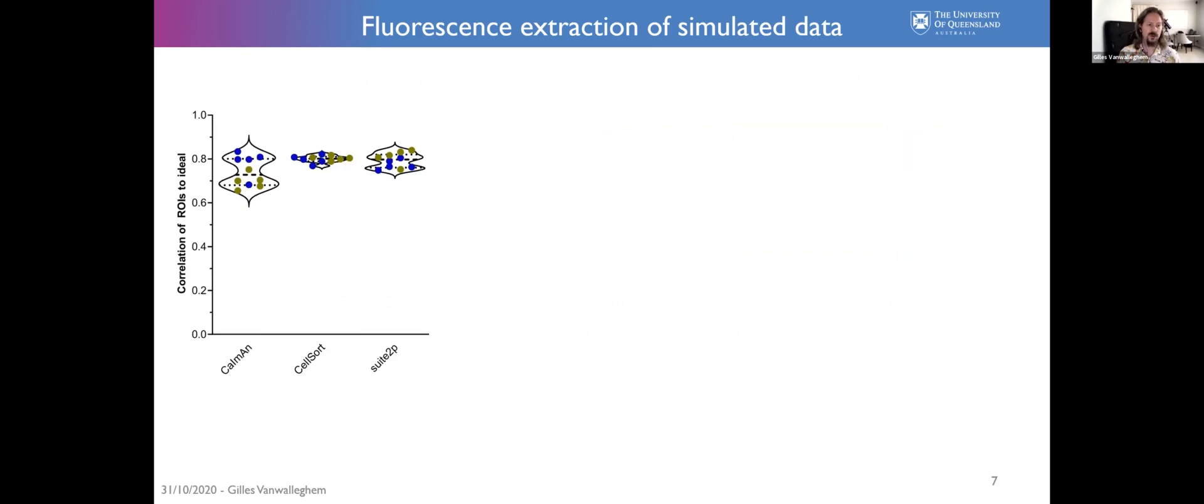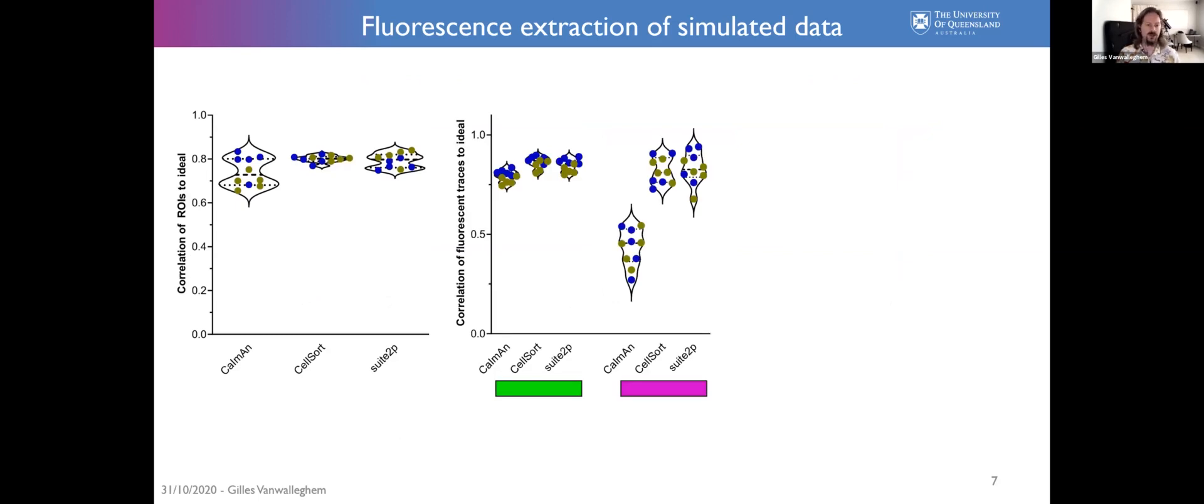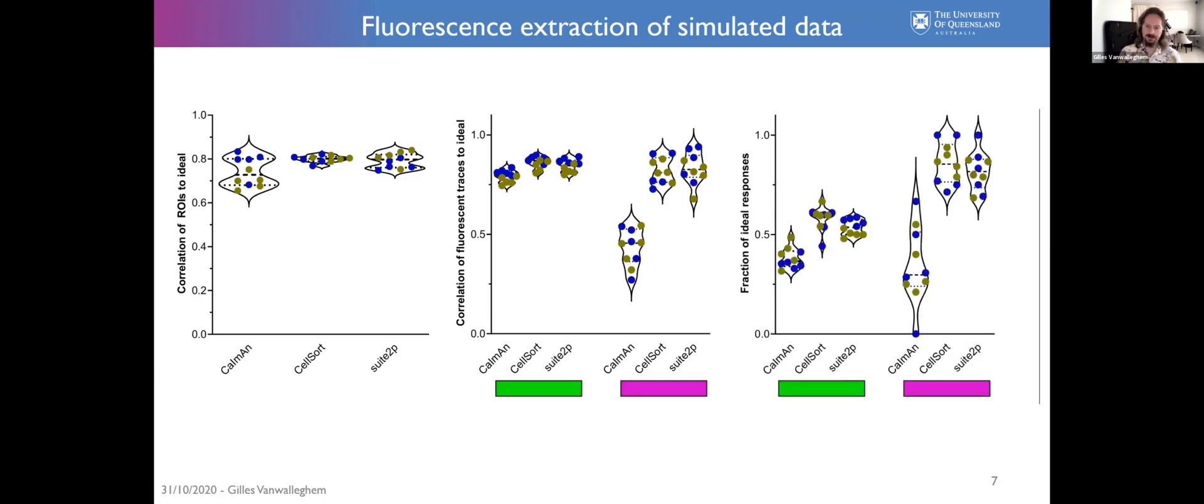We've taken those ideal movies and put them through all of these approaches. The advantage is that we know all of the parameters of our data, so we don't have to fine-tune parameters of all of these models. It looks fine, they detect the neurons easily. However, if you look at the correlation between the fluorescent traces, the GCaMP signal and the ideal responses over time, what you see is that all of these tools do a very good job at finding all of these activated neurons. However, if you look at the inhibited neurons on the right with the purple rectangle, you see that Caiman really struggles to find the inhibited neurons. CellSort and Suite2P deal with it fine.